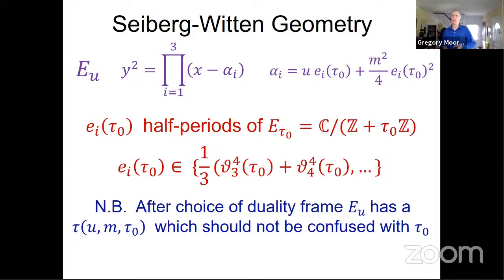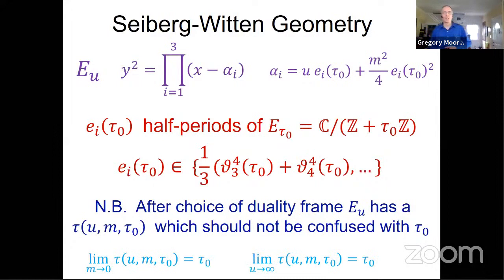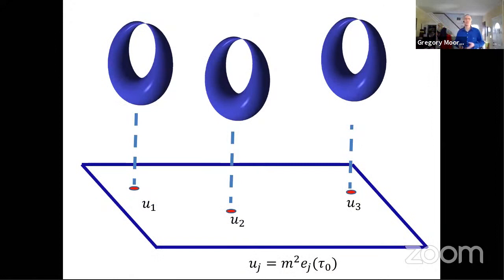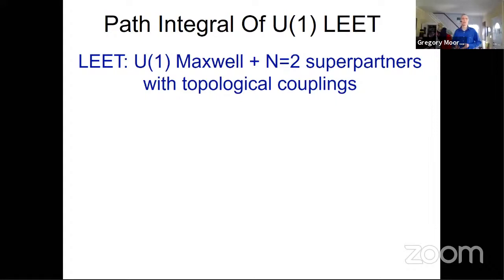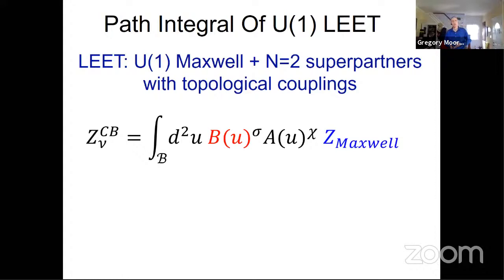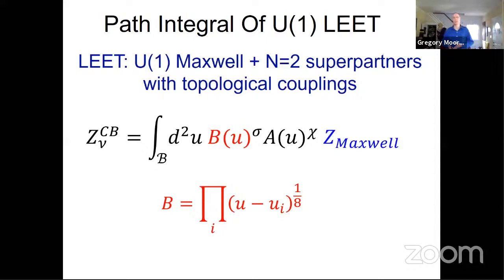Please do not confuse tau naught with the modular parameter of the elliptic curve E_u. If you make a choice of duality frame or homology basis for E_u, it has a modular parameter that's a function of u, m, and tau naught, and in certain limits — importantly when u goes to infinity — it becomes tau naught. The family of elliptic curves is generically smooth, but there's a discriminant locus where it degenerates at three points expressible in terms of m and tau naught. The coupling to the signature looks like a product over the discriminant locus of (u - u_i) to the one-eighth power — and that one-eighth power should bother you, suggesting the measure might not be well defined.